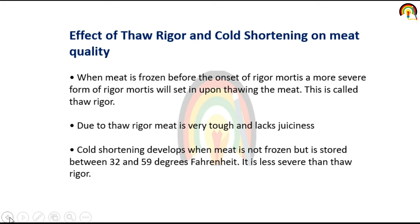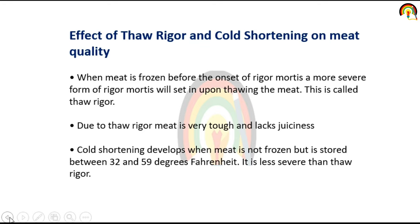Effect of thaw rigour and cold shortening on meat quality: when meat is frozen before the onset of rigor mortis, a more severe form of rigor mortis will set in upon thawing — this is called thaw rigour. Due to thaw rigour, meat becomes very tough and lacks juiciness. Cold shortening develops when meat is not frozen but is stored between 32 and 59 degrees Fahrenheit. Cold shortening is less severe than thaw rigour.